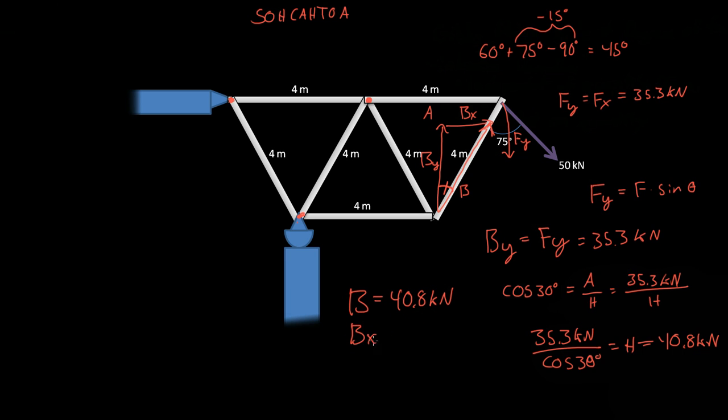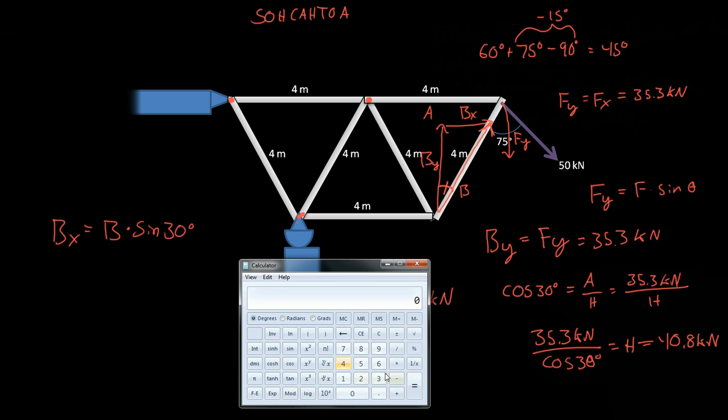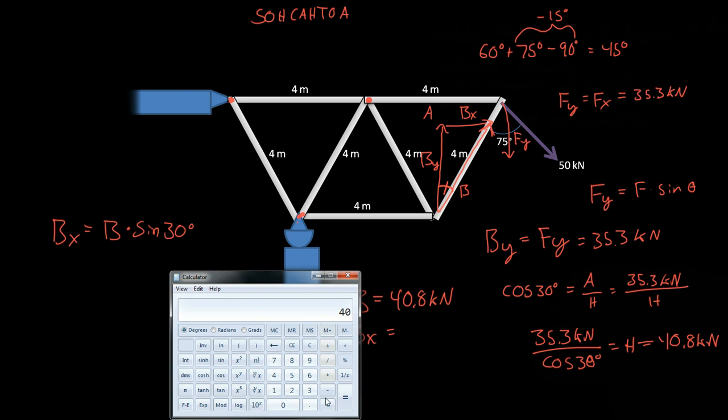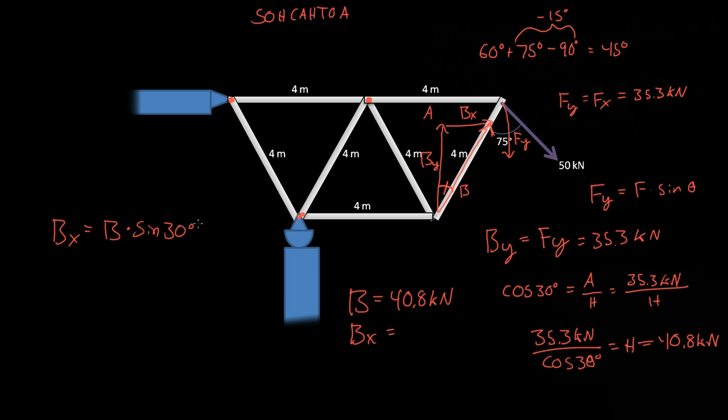So what is BX? BX. Well, we know we can just do the sine. So the BX is equal to the force B times the sine of the angle. And the angle is 30 degrees. So we get 40.8 times the sine of 30 degrees. And that is equal to 40, 20.4. 20.4 kilonewtons.